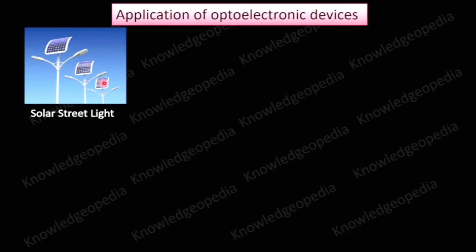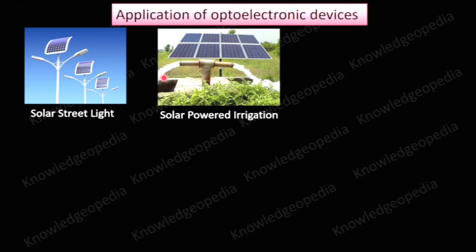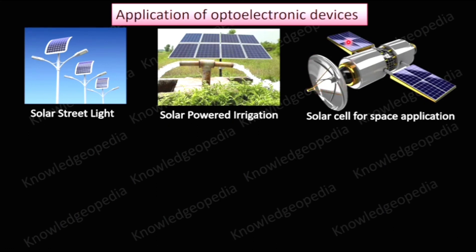Solar street lights are now commonly used in many cities because they use much less power compared to conventional street lights. Solar cells are also used for irrigation — a pump is operated to pump water for agriculture, and the electrical energy for that pump comes from solar panels. Solar cells are also used for space applications, such as satellites.